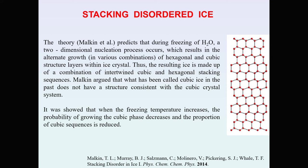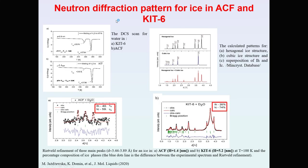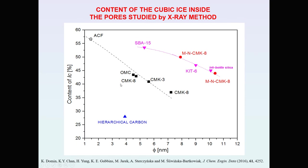The resulting ice is made up of a combination of intertwined cubic and hexagonal stacking sequences. Our neutron diffraction measurements confirm the results obtained from X-ray diffraction. For ice observed in ACF and KIT6, we find two ice structures with different content of cubic and hexagonal ice. We find that the hydrophilic surface of pores, as a function of pore size, shows a larger content of cubic ice than the hydrophobic surface of the pores.